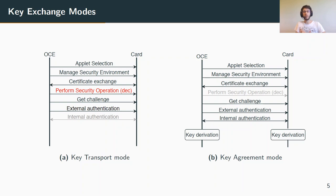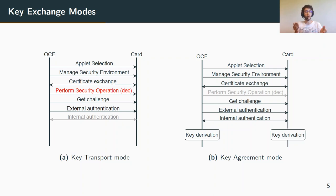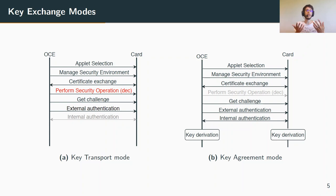The key agreement mode follows a similar workflow, but mutual authentication is mandatory here since key material is exchanged by both parties and session keys are derived only after mutual authentication. The perform security operation APDU becomes unnecessary since no raw session keys are exchanged. Key agreement clearly provides stronger security guarantees than key transport; however, in a constrained environment, performance is a big deal and key transport requires far less computational power.